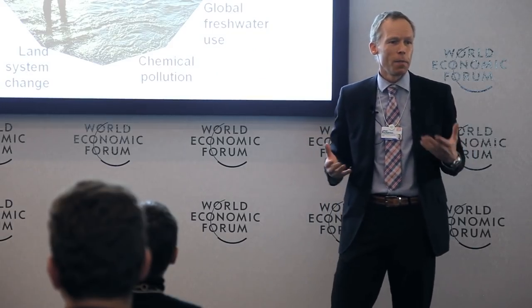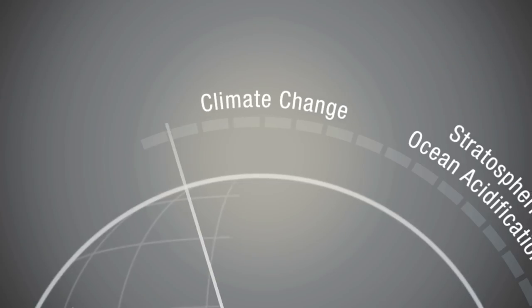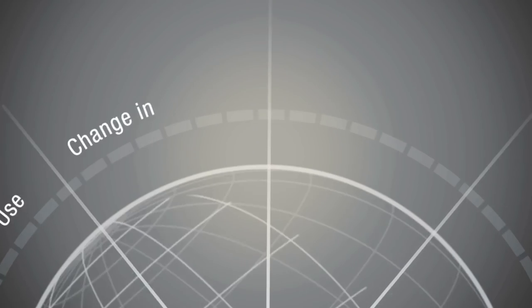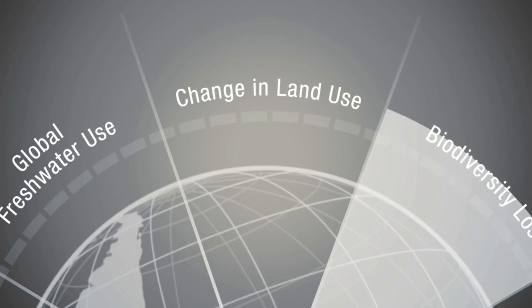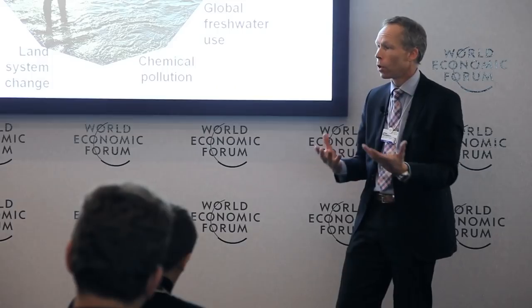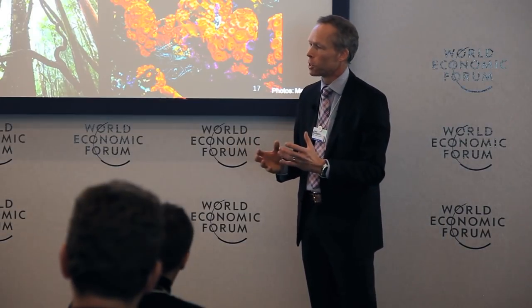It may surprise you that among those nine proposed boundaries is not only climate change, not only the stratospheric ozone, which are obviously global. It's also the slow variables of biodiversity loss, land-use change, freshwater use, which control the underlying resilience and stability of the system.